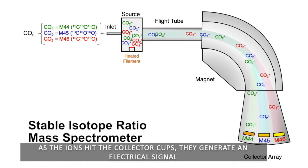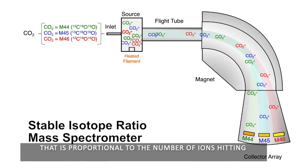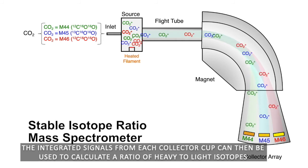As the ions hit the collector cups, they generate an electrical signal that is proportional to the number of ions hitting. The integrated signals from each collector cup can then be used to calculate a ratio of heavy-to-light isotopes.